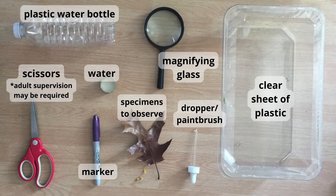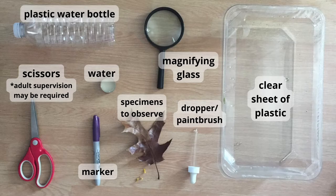You will need a plastic bottle, a magnifying glass, a clear sheet of plastic such as from a recycled salad container, a dropper or a paintbrush, some water, specimens to observe such as leaves, small feathers, or an onion skin, a marker, and scissors. Adult supervision may be needed when using scissors.